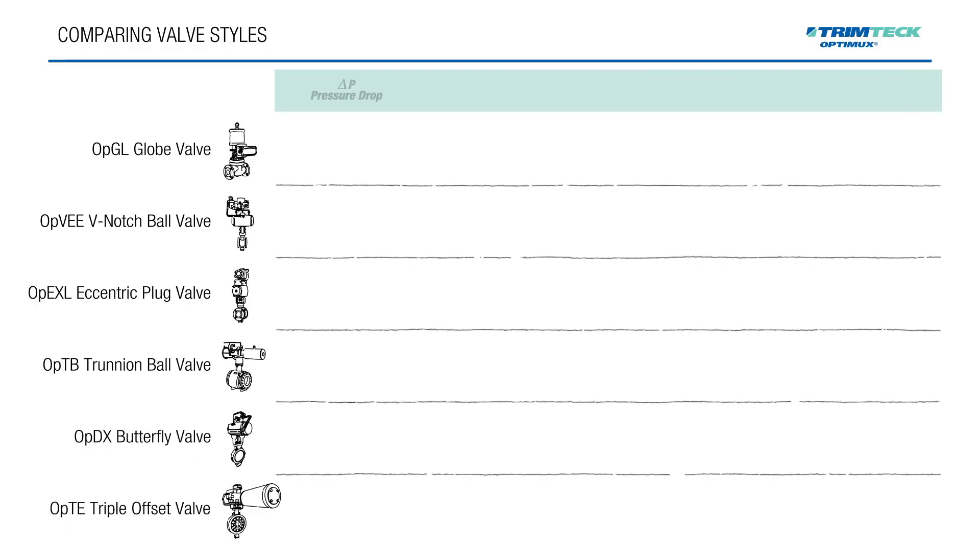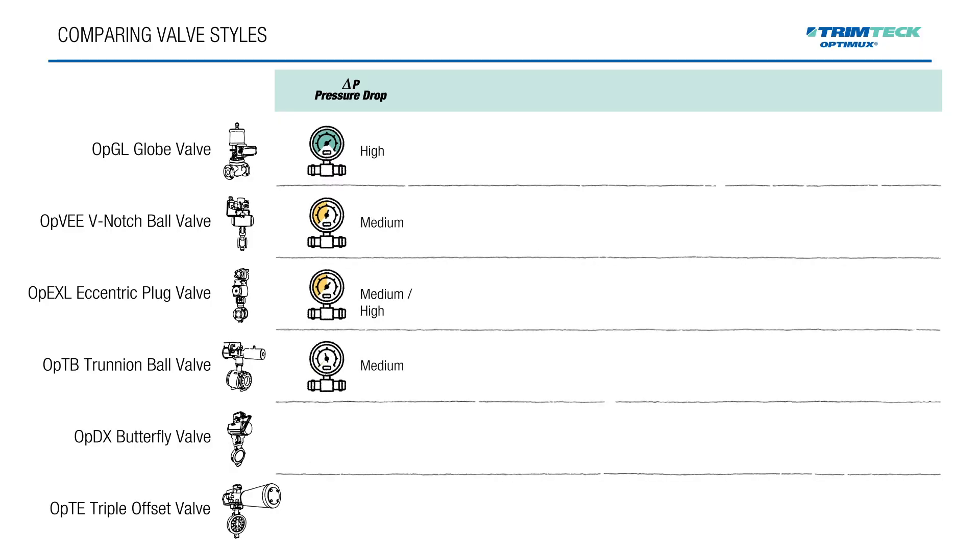First up: pressure drop. Globe valves generally create and tolerate the most pressure drop, making them ideal for throttling applications. As we move toward rotary designs like butterfly and trunnion ball valves, pressure drop decreases. So if your system can't tolerate high pressure drops, a rotary style valve may be more appropriate.